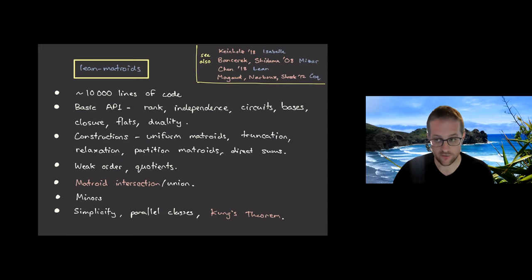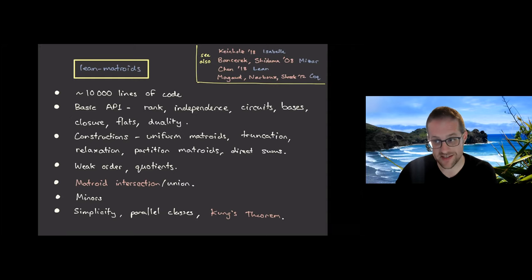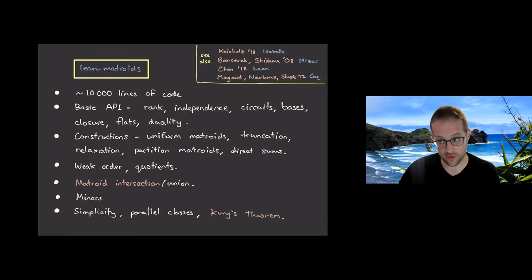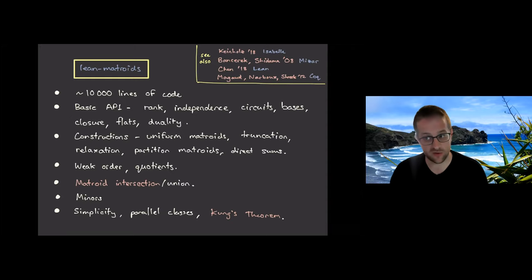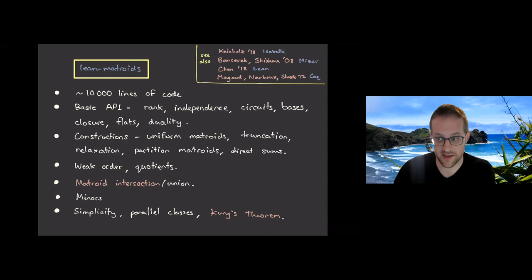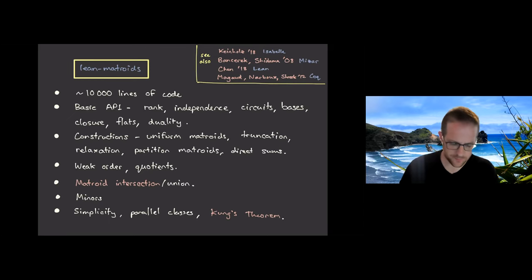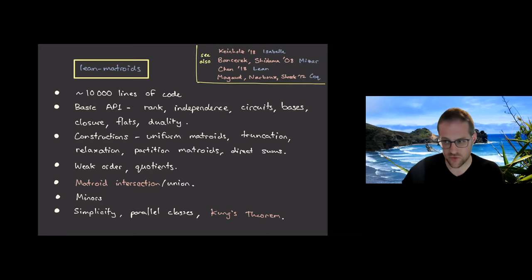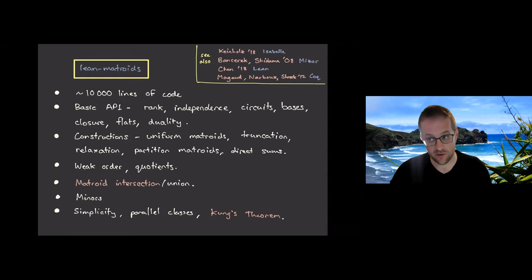We've got a number of different constructions: uniform matroids, truncation, relaxation, partition matroids, and direct sums. We've got the weak order and quotients — the weak order meaning the rank function of one matroid is bounded above by the rank function of the other on the same ground set. Quotients amount to taking extensions and contractions. Matroid intersection is one of the two larger results we've formalized. And matroid union we've partially done — some statement with the same content as the matroid union theorem is formalized.